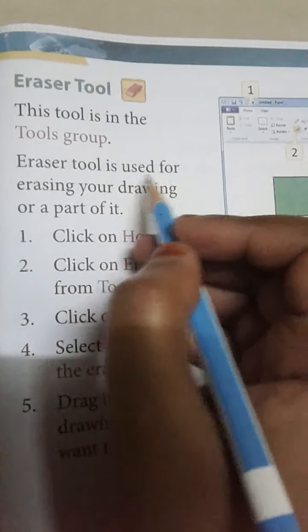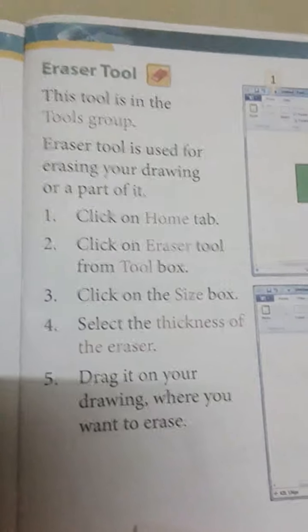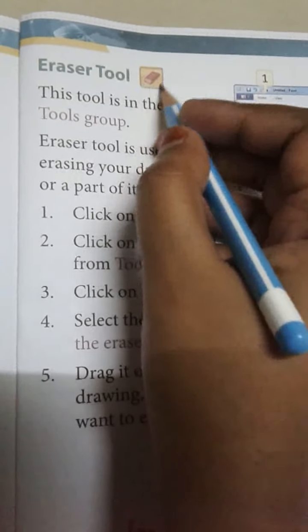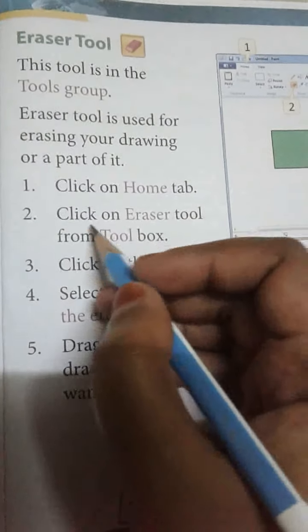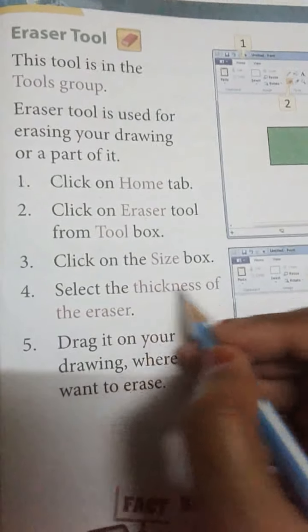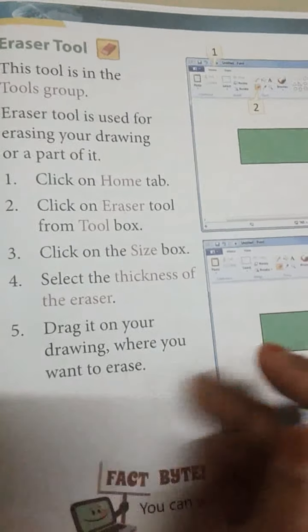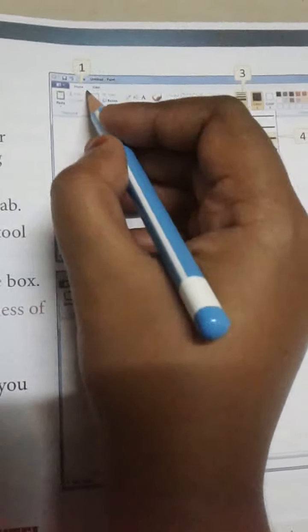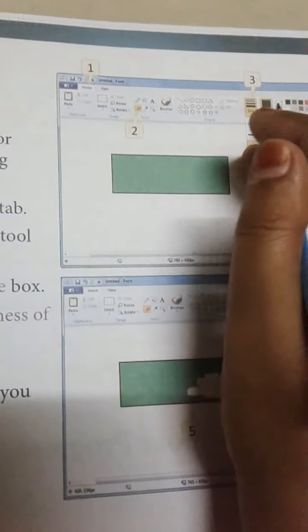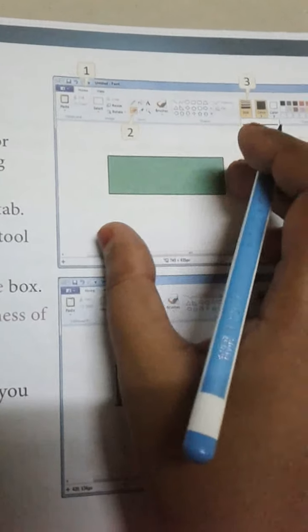Eraser tool. This tool is in the tool group. The eraser tool is used for erasing your drawing or a part of your drawing. Steps: Click on the Home tab, click on the eraser tool from the tool box, click on the size box, select the thickness of the eraser, drag it on your drawing where you want to erase. First go to the Home tab, select the eraser tool from the tool group, choose the thickness, and then erase where needed.